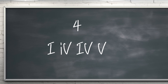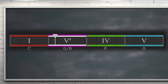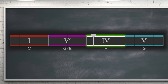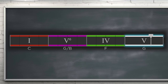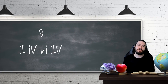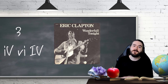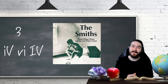Another all-major progression at number 4: 1, 1, 1st inversion 5, 4, 5. First inversion chords can replace any chord in your progression — here it's the 5 chord. Examples include Wonderful Tonight by Eric Clapton and Please Please Please Let Me Get What I Want by The Smiths.